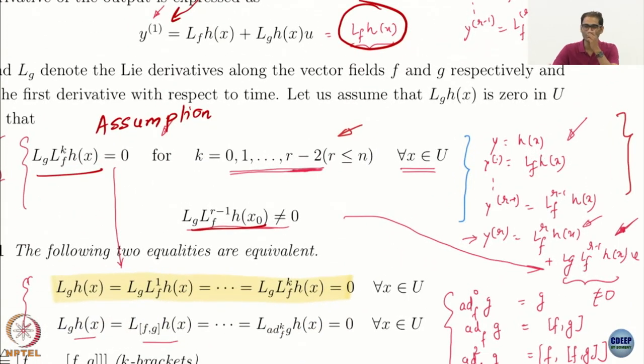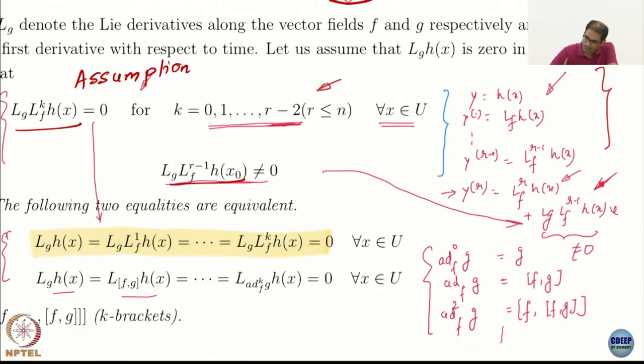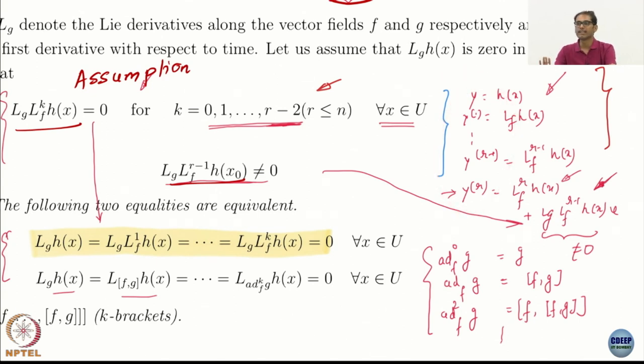If the control does not appear in any derivative, then it does not mean that you have no control. So the point is that you have only r variables that you could design with.